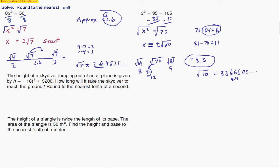Remember, it's two answers — either positive or negative. Now let's look at this next word problem. It talks about the height of a skydiver jumping out of an airplane, given by this approximation. How long will it take the skydiver to reach the ground? The ground is represented by h in the formula, and the ground is at a distance of zero. So let's put zero in place of h: 0 equals negative 16t squared. T is what we're asked to find because they want to know the time — how long will it take.